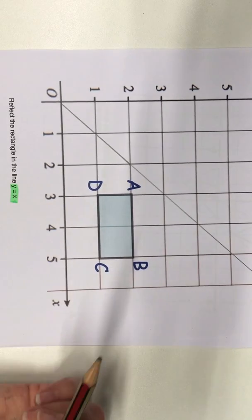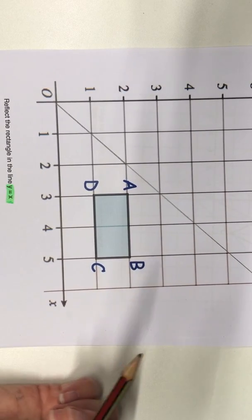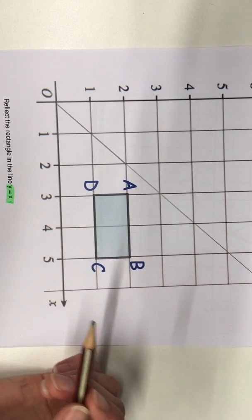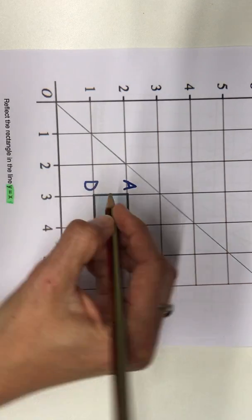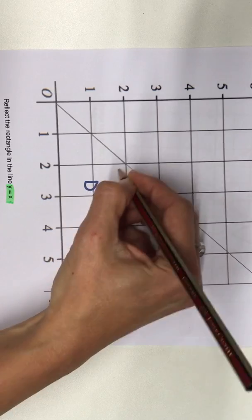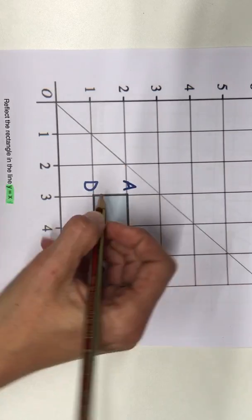Now, we have to reflect across a diagonal line. So when we're reflecting across diagonals, we are going to take each point on this shape and we're going to count the number of diagonals it is away from the mirror line.